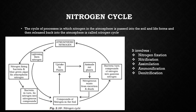When plants and animals die, the complex nitrogen compounds present in their dead bodies are decomposed and converted into simple compounds of nitrogen by certain bacteria and fungi present in the soil. Animal excretions like urine are also converted into simple compounds of nitrogen, which go back to the soil and are taken up again by plants. This process is called ammonification.